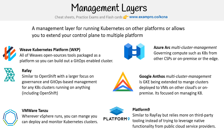Then there's Platform Nine, which is similar to Rafay but relies more on third-party tooling. As far as I understand, it doesn't leverage native cloud service provider functionality like GKE or EKS — it uses something installed on virtual machines to simulate what Google Anthos does, more or less. So that's the idea there.